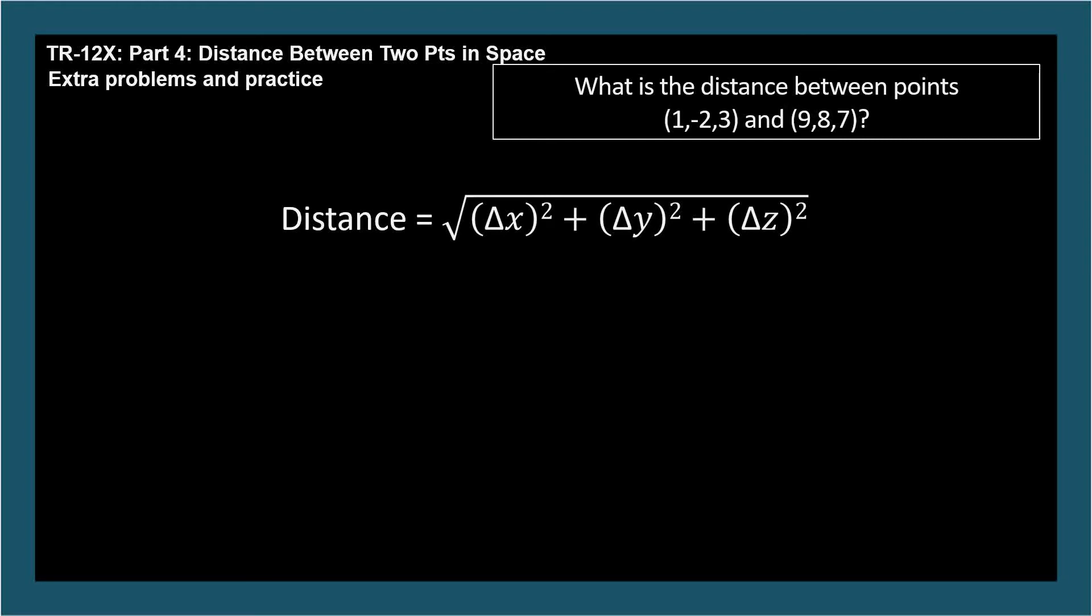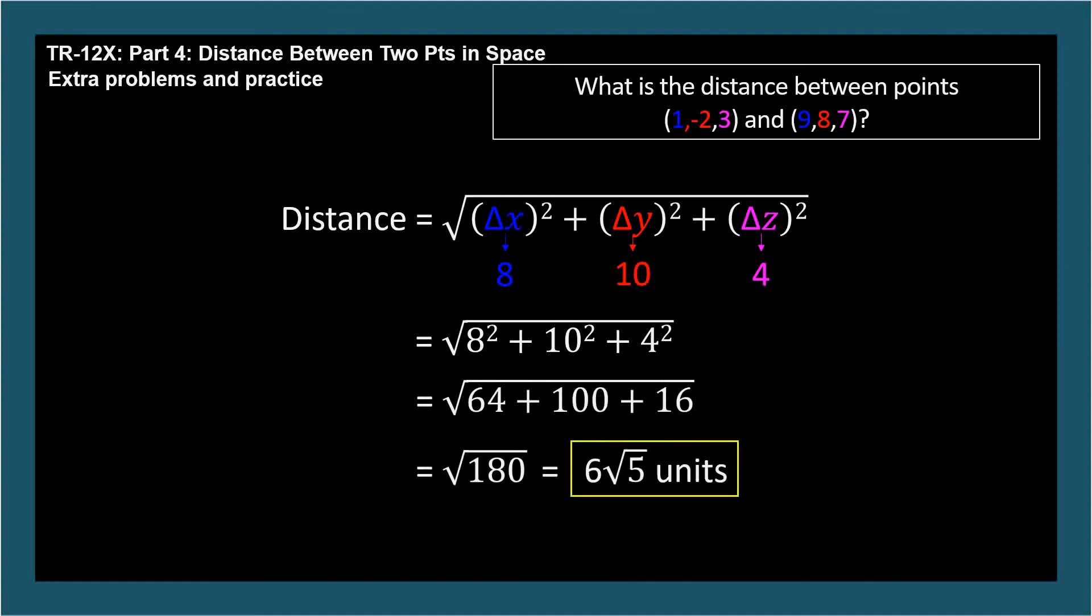The deltas are 8, 10, not 6, and 4. Square them, add them up, take the square root, simplify the radical.